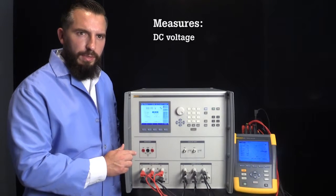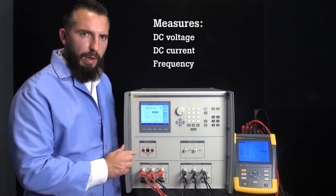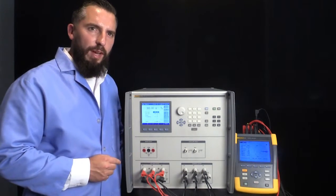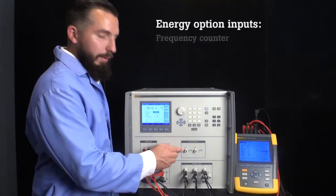The input section provides inputs that can measure DC voltage, DC current, or frequency from the output of a power meter or transmitter. If equipped with the energy option, the 6003A has an auxiliary input which provides a frequency counter that counts the pulses from the energy meter.